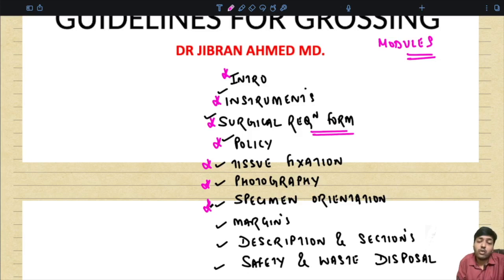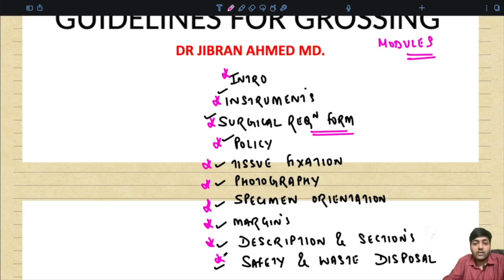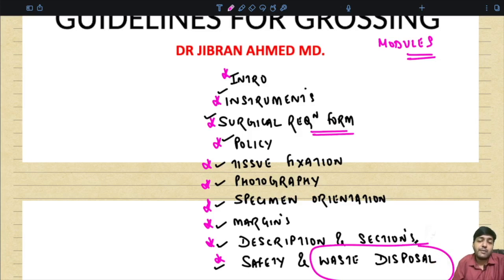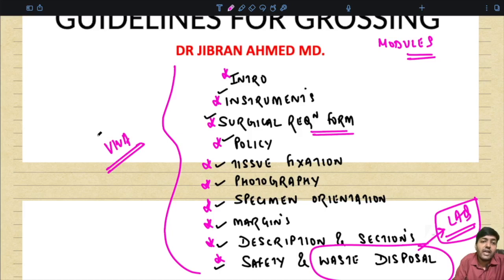We will also cover how photography should be done, the importance of documentation, specimen orientation — which is very important — the different kinds of margins such as radial margin, shave margin, and their individual importance, how you should describe a particular specimen, what sections to give, and how to safely carry out the grossing. We will cover safety aspects that surprisingly none of the residents know, as well as waste disposal — which is asked as a long answer question in exams — and all these portions are asked in your viva.